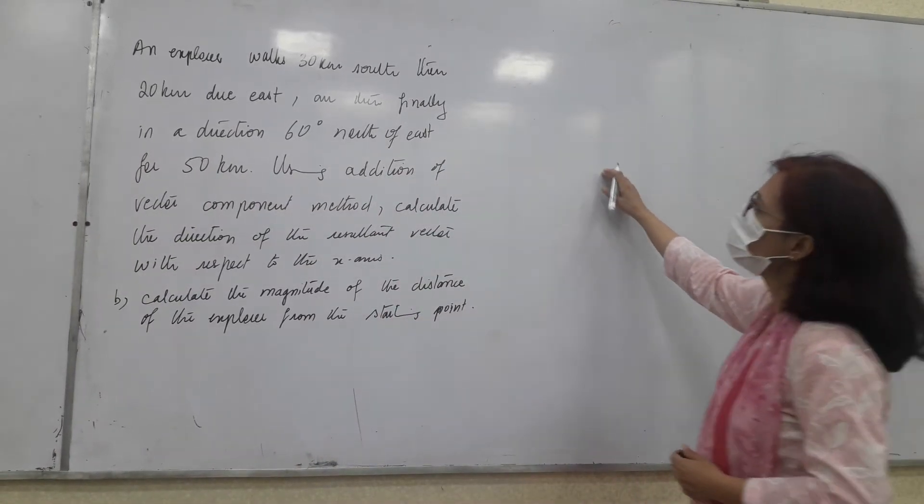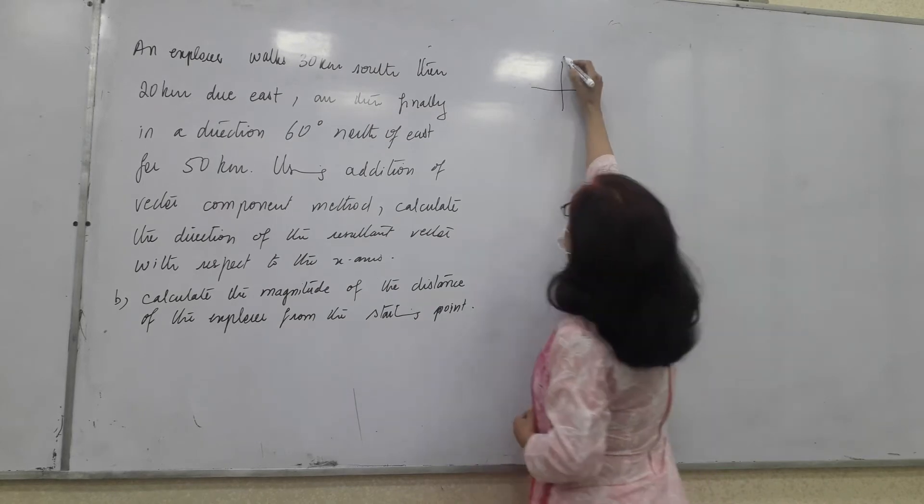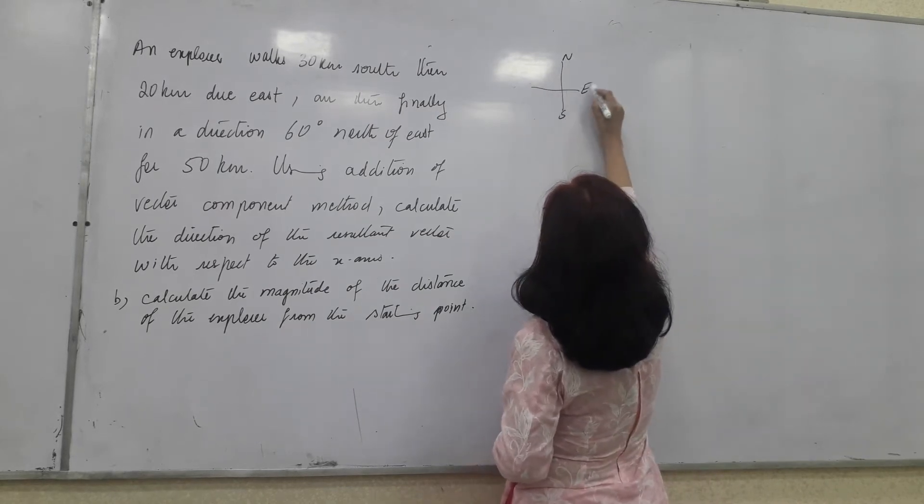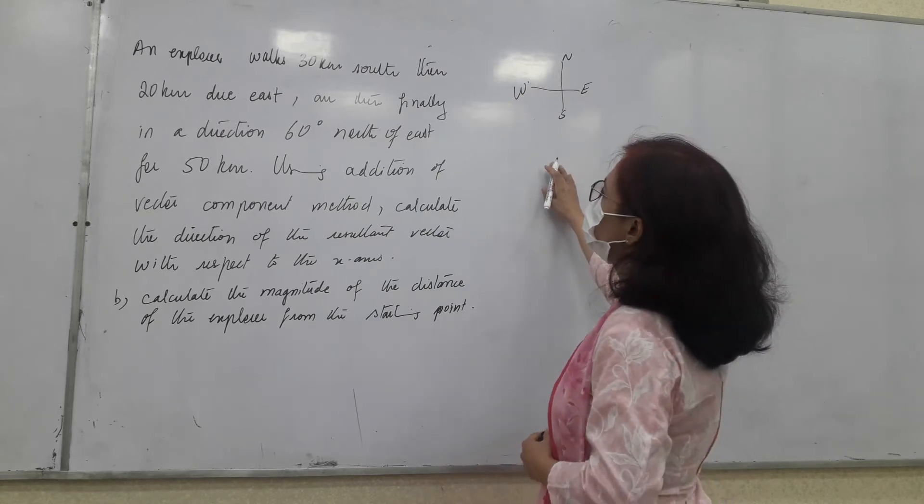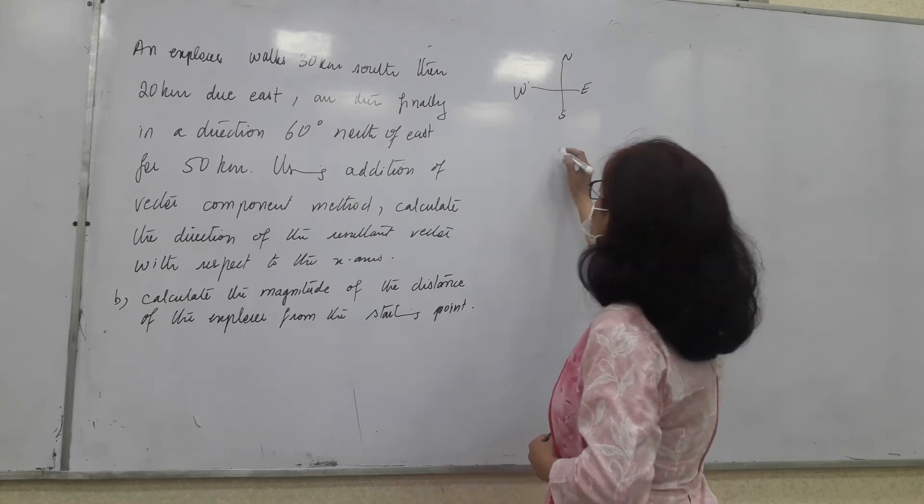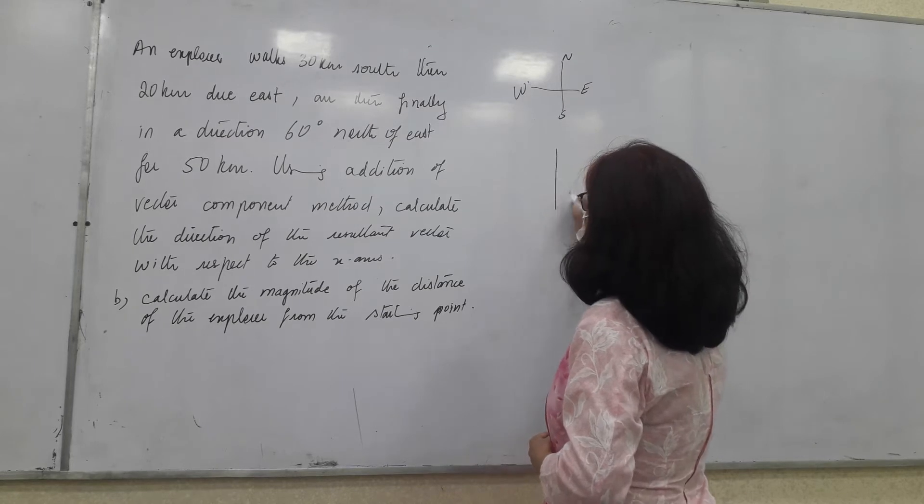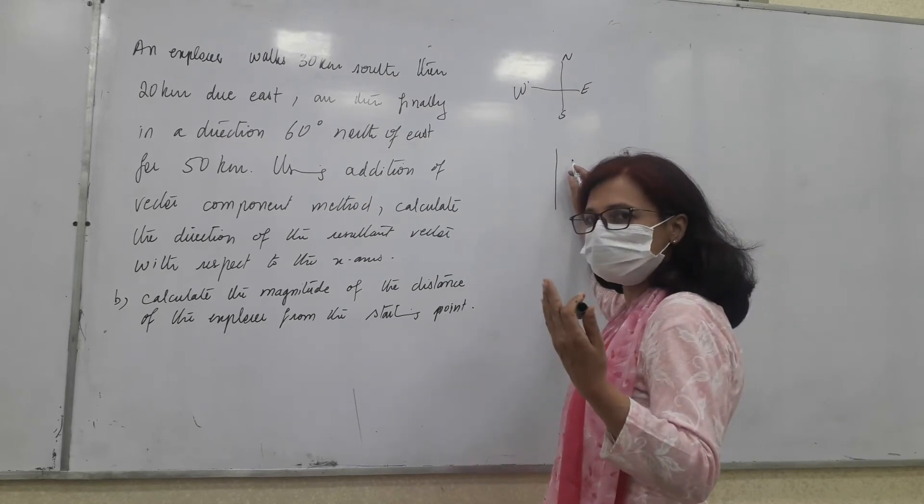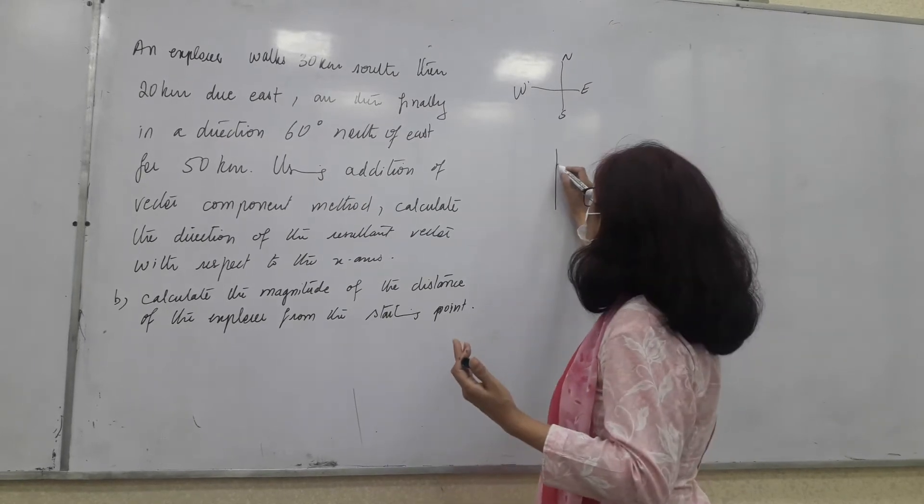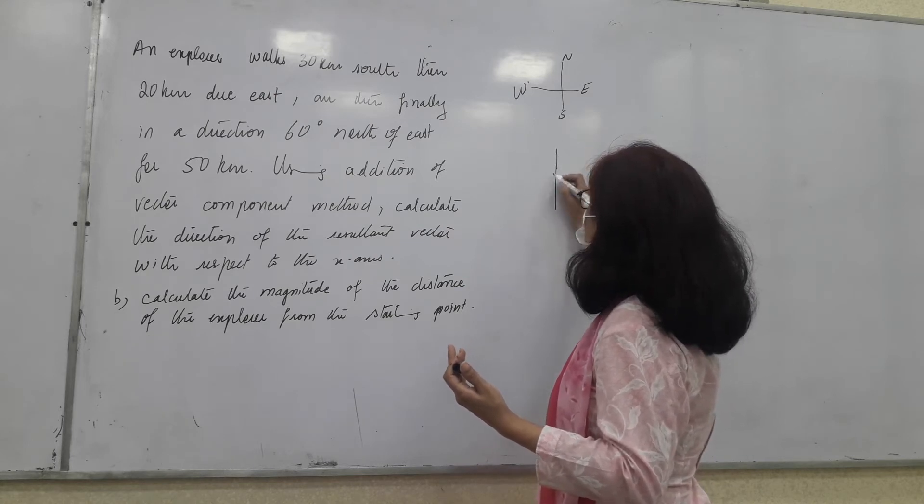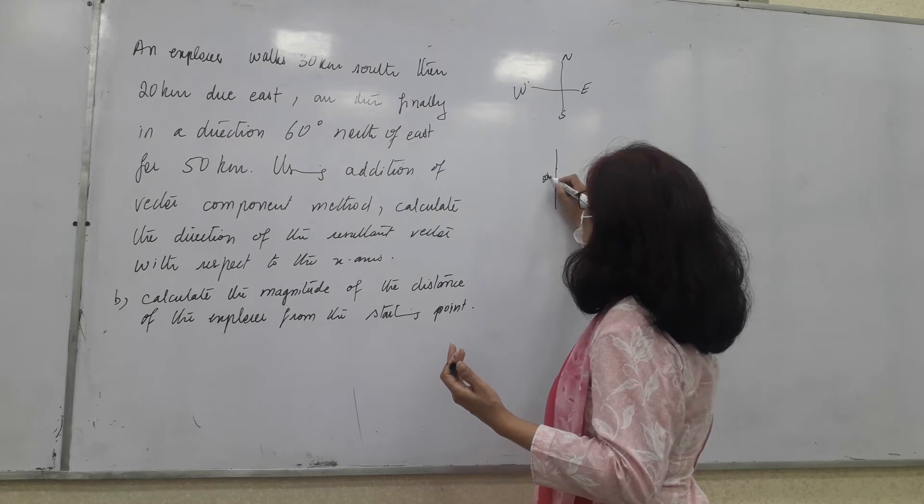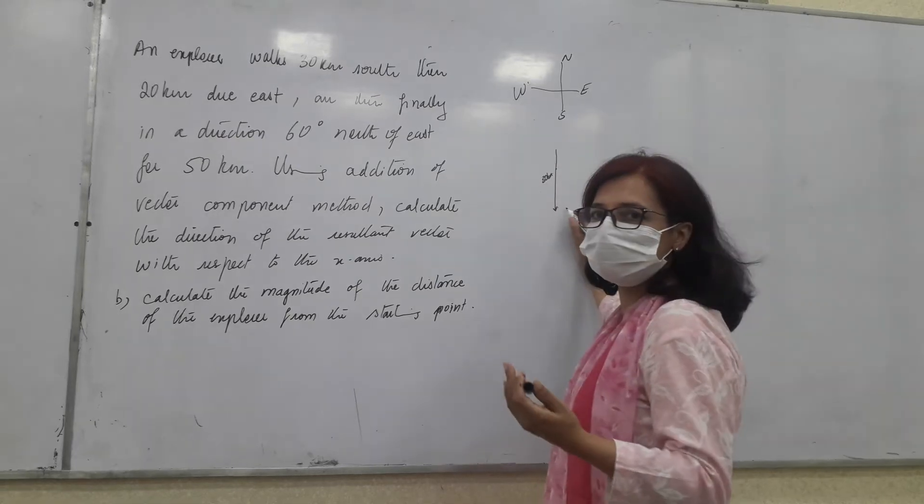First of all, we know that this is north, south, east and west. Now, let us follow this and the explorer moves 30 kilometers south. So, the first vector should be south and you can have some rough scale in your mind, right? So, 30, let us say, is like this. About three spaces. And this is 30 kilometers towards south means like this. Okay, next.